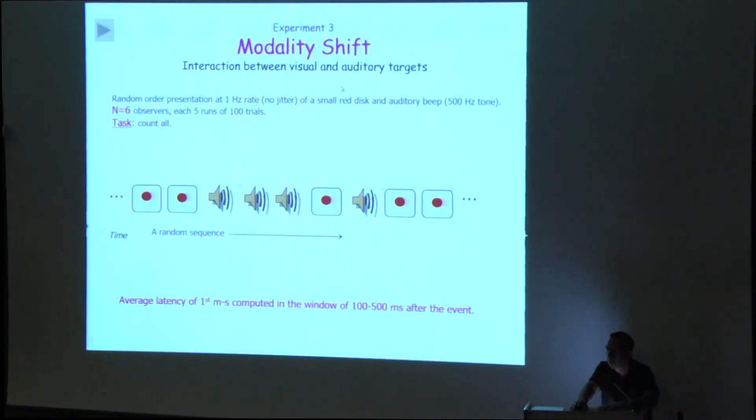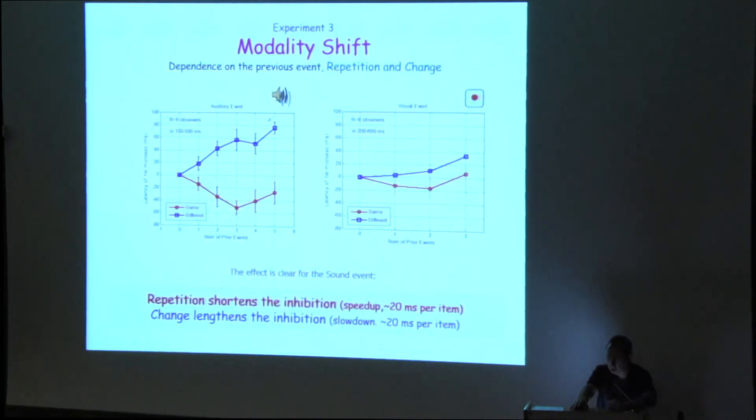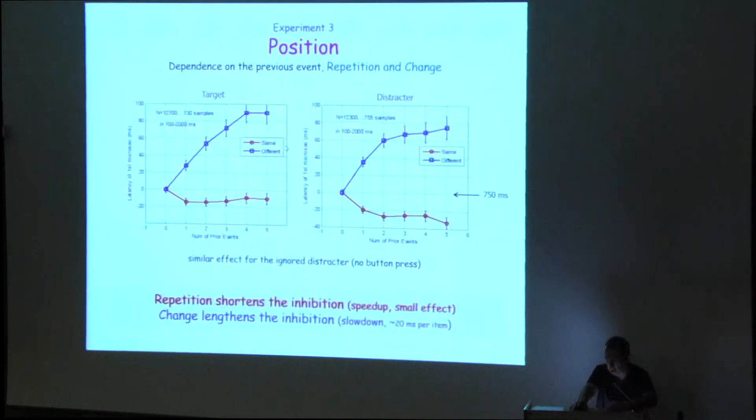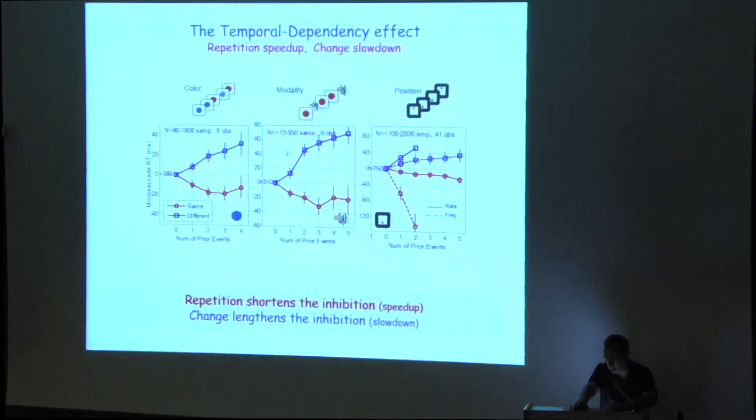That's the way we plot it. Exactly the same thing happens when you do audio-visual, a modality shift. So you have a beep or a patch, and we get a similar result for the audio. It doesn't work so well when looking at the visual part. But when looking at the auditory part, if the beep was preceded by one or more, two or more, and so on beeps, it becomes faster. And the opposite when it's preceded by vision. And we can do a position thing. We have some data from another experiment. We see very similar pattern of results. And this is sort of a summary. We have it also for color. And this is the position. And this is for modality. And the principle is that repetition shortens the inhibition. And change maintains the inhibition, or slows down. So a change means a surprise. A surprise is slowing you. Something surprising happens, you need to reconsider.